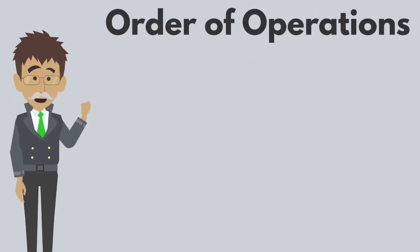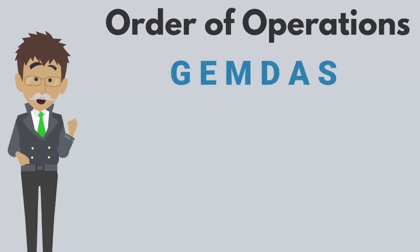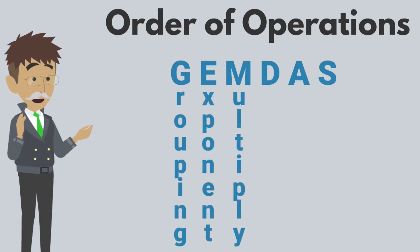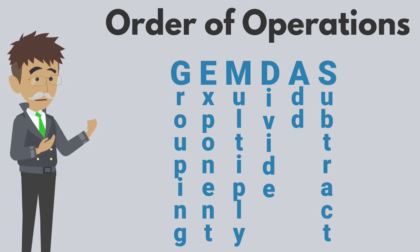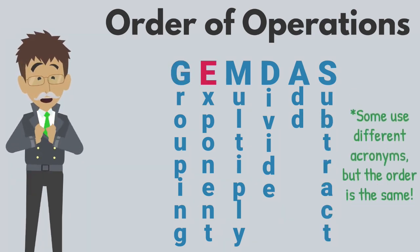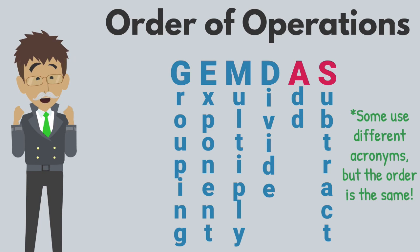The acronym GEMDAS stands for grouping symbols, exponents, multiplication, division, addition, and subtraction. This is the order in which we perform operations within an expression.